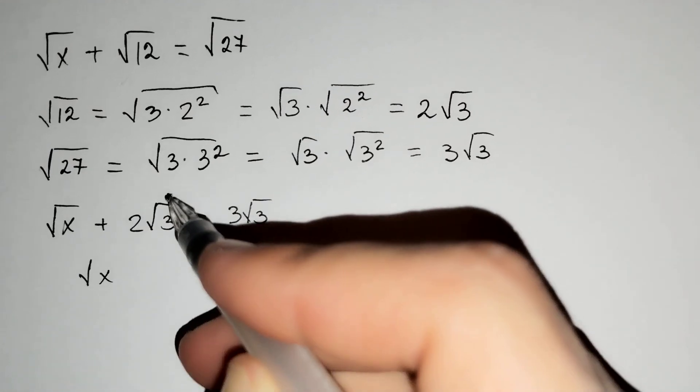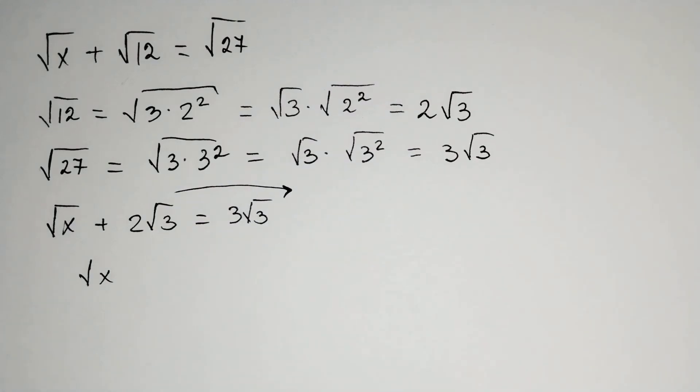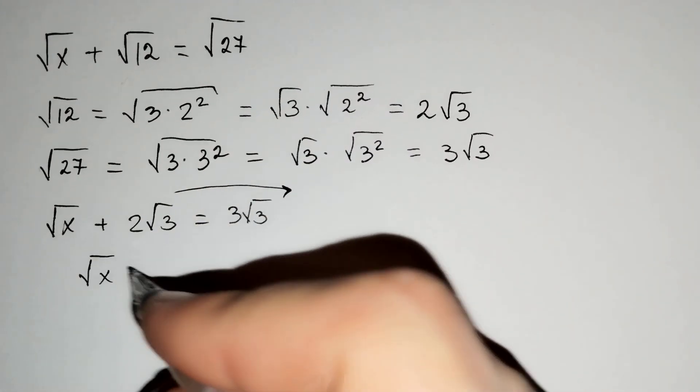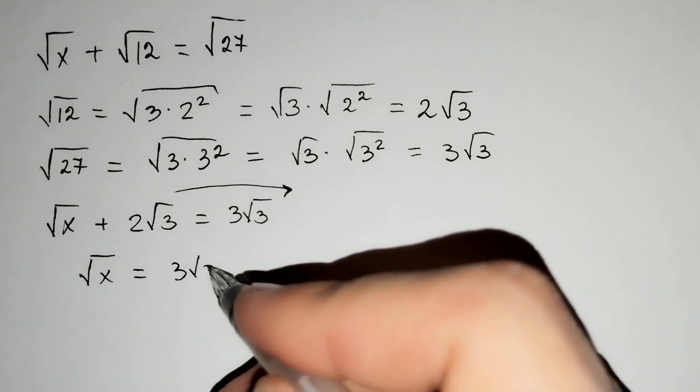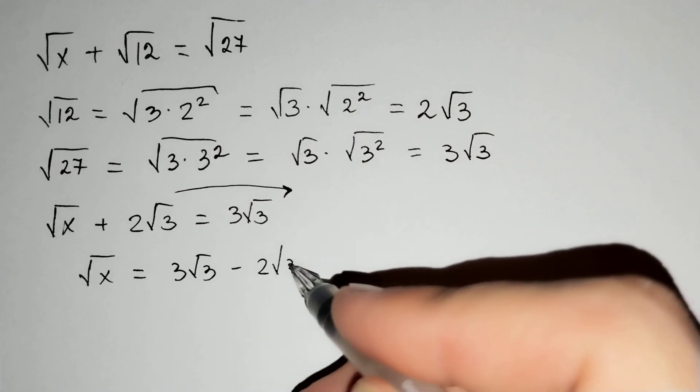Let's move this to the other side of our equation. The square root of x equals 3 square root of 3 minus 2 square root of 3.